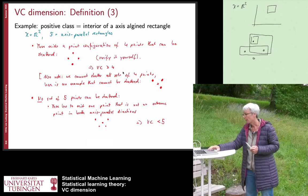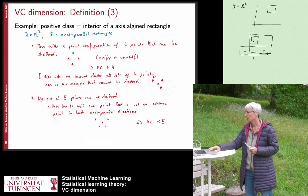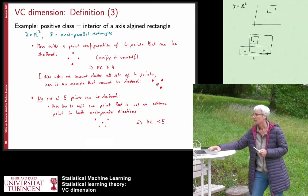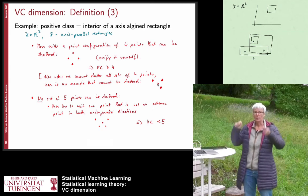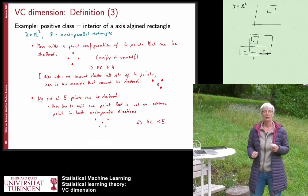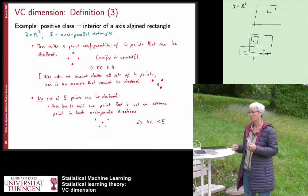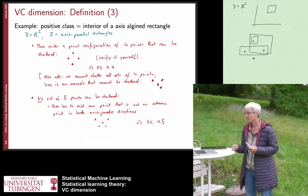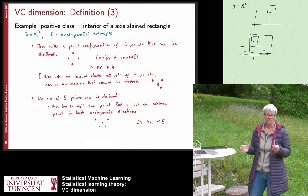Note that we cannot shatter all datasets of four points. For example, if one point is in the interior and you want everybody outside to be plus one but the interior point to be zero, that does not work with axis-parallel rectangles. But we found one configuration that can be shattered, so we know the VC dimension is at least four.